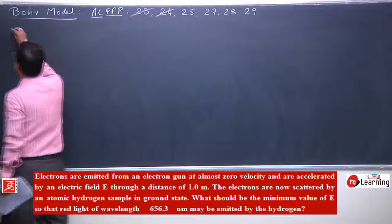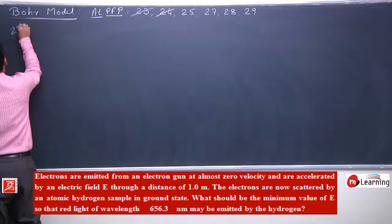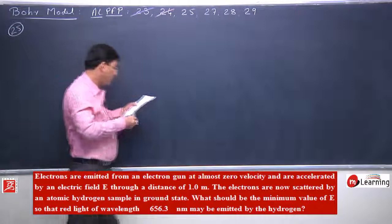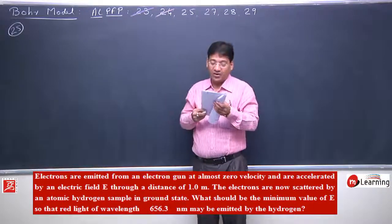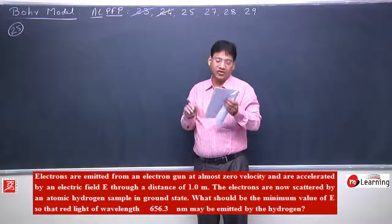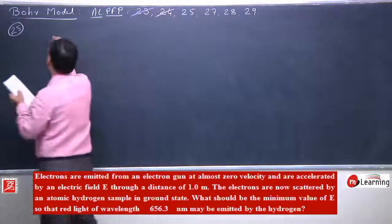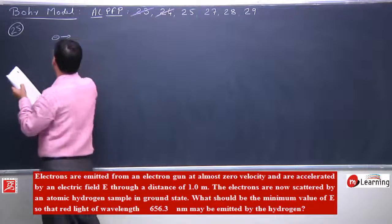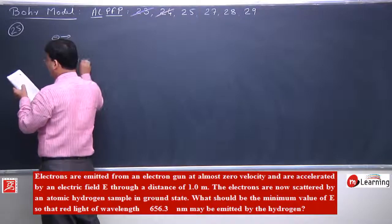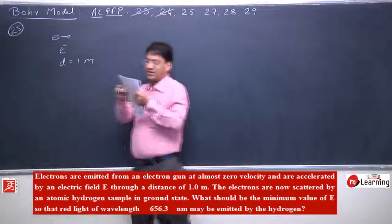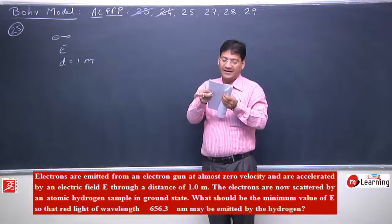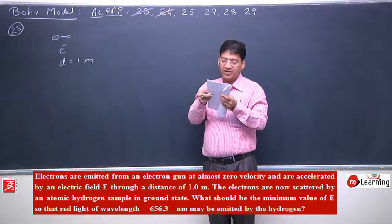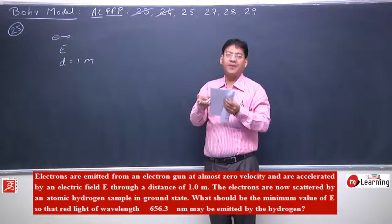Let us start solving problem number 25. Electrons are emitted from an electron gun at almost zero velocity and accelerated by electric field E through a distance of 1 meter. The electrons are now scattered by an atomic hydrogen sample in ground state. What should be the minimum value of E so that red light may be emitted?